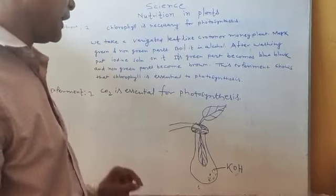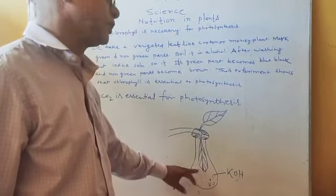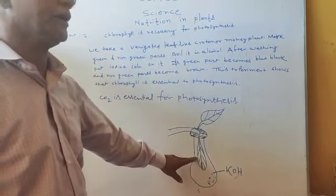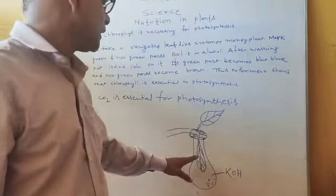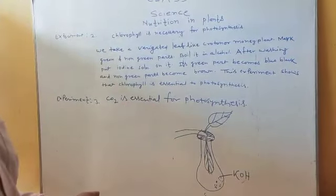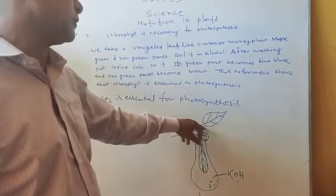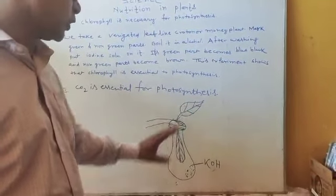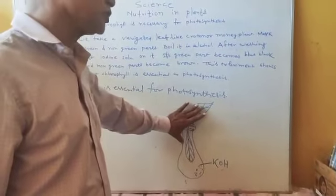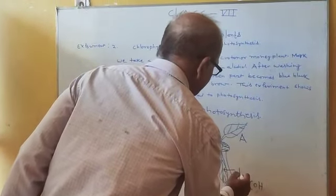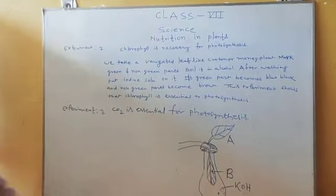Why is this so? Because the carbon dioxide present inside the bottle was absorbed by the KOH solution. The leaf inside did not get carbon dioxide, so starch was not formed on that leaf. But the leaf outside the bottle got carbon dioxide, so starch was formed in it. Therefore, leaf A, which was outside, became blue-black, and leaf B, which was inside, became brown in color due to the absence of carbon dioxide.